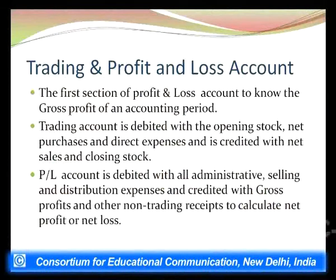Now I will talk about how we make the trading and profit and loss account. This account has two sections. The first section is known as the trading account, and the second section is known as the profit and loss account. The result of trading of goods or services is shown in the first section, and the result of dealing with administrative expenses and net profit is shown in the second section.